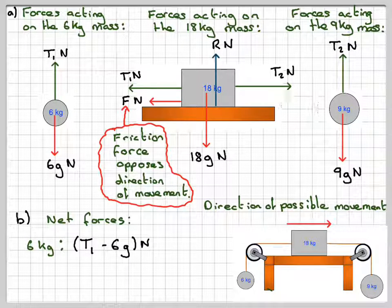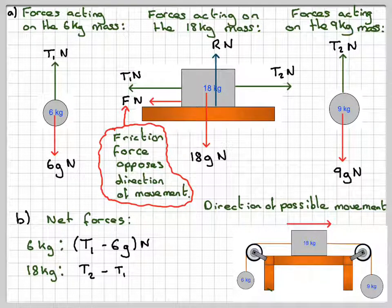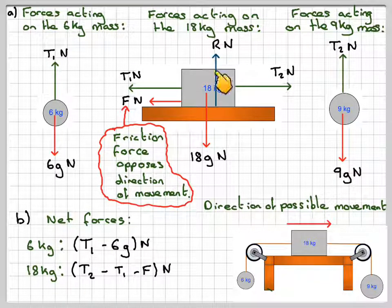In the case of the 18 kilogram mass, it's going to be T2 minus T1 minus F. These are going to be in equilibrium.